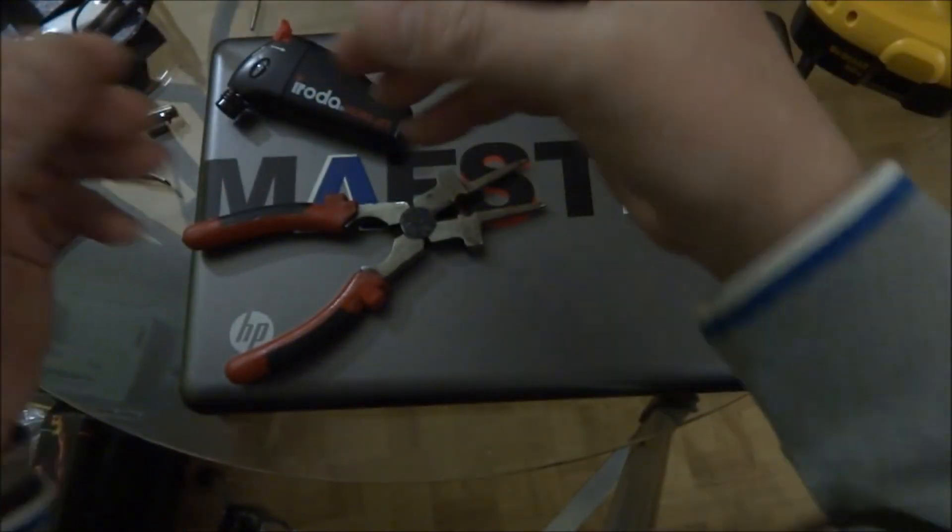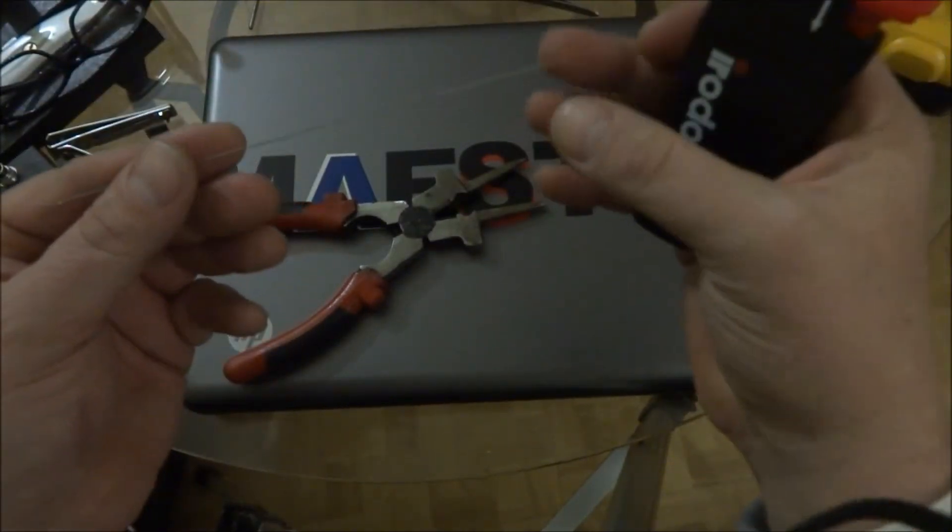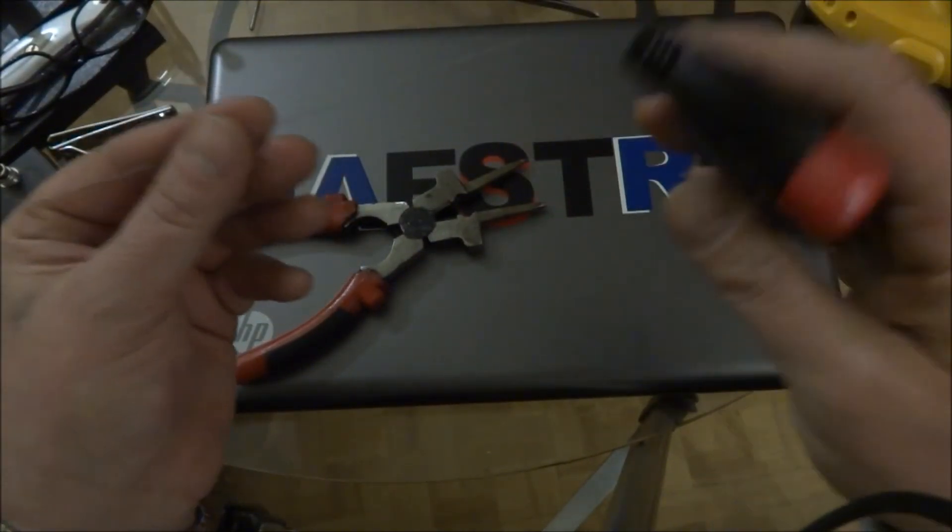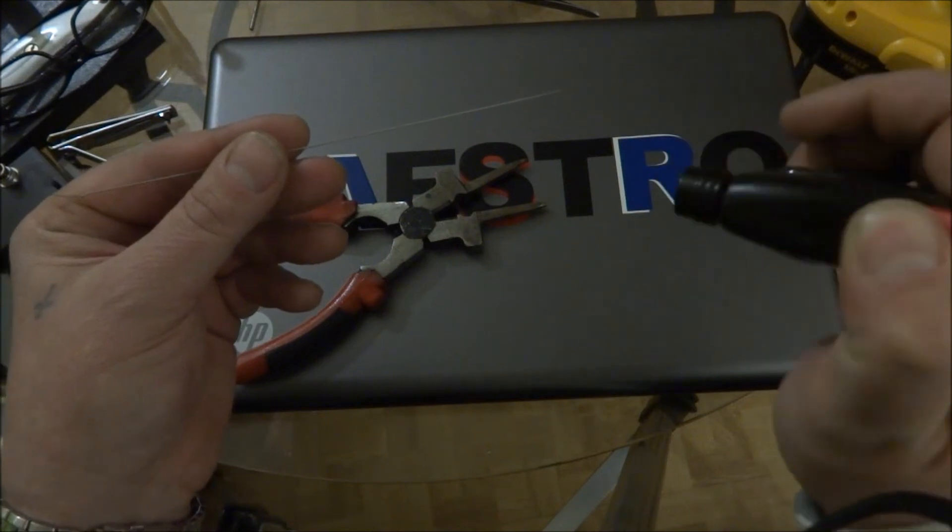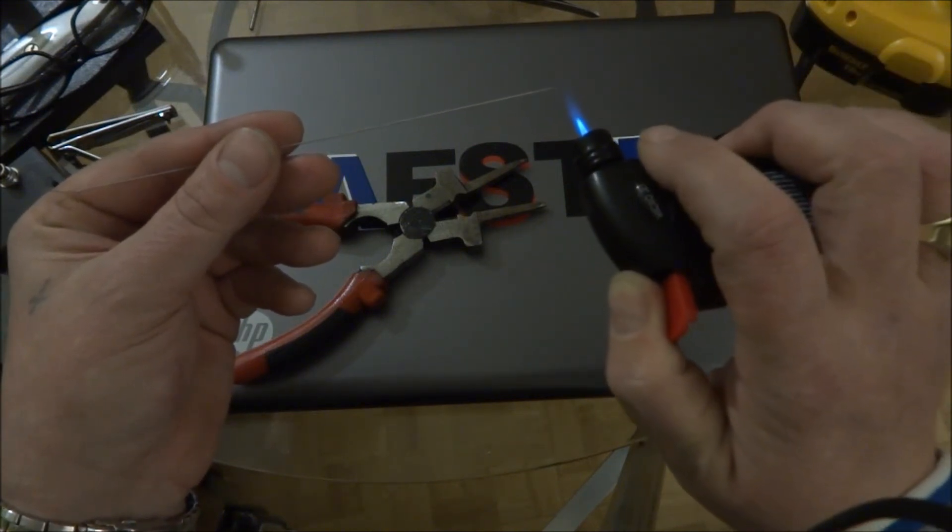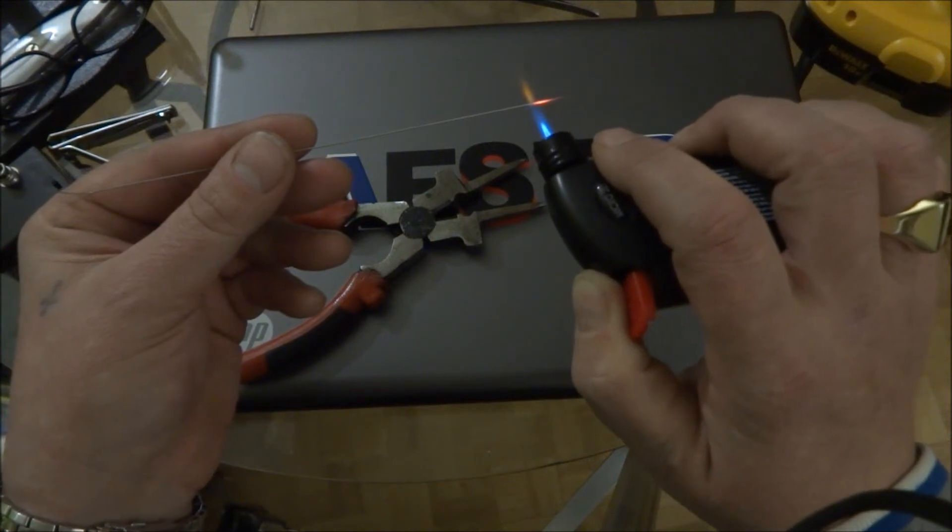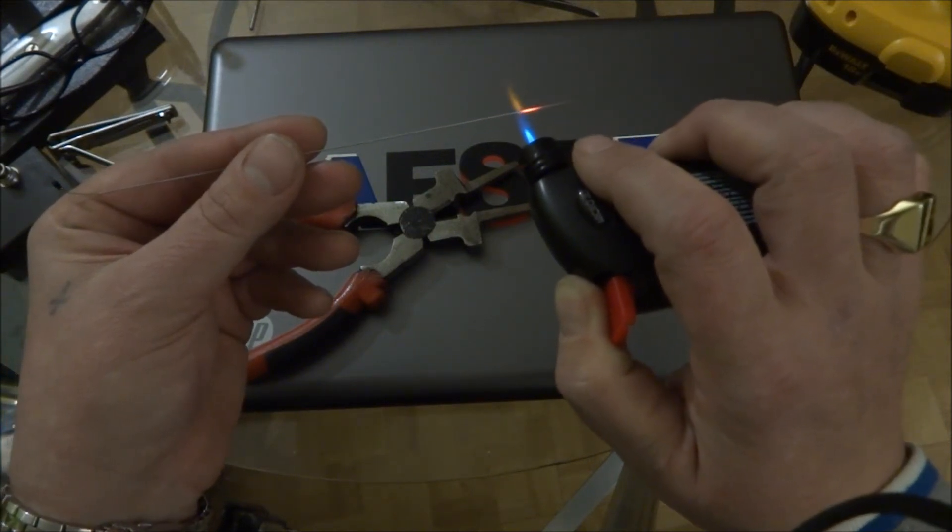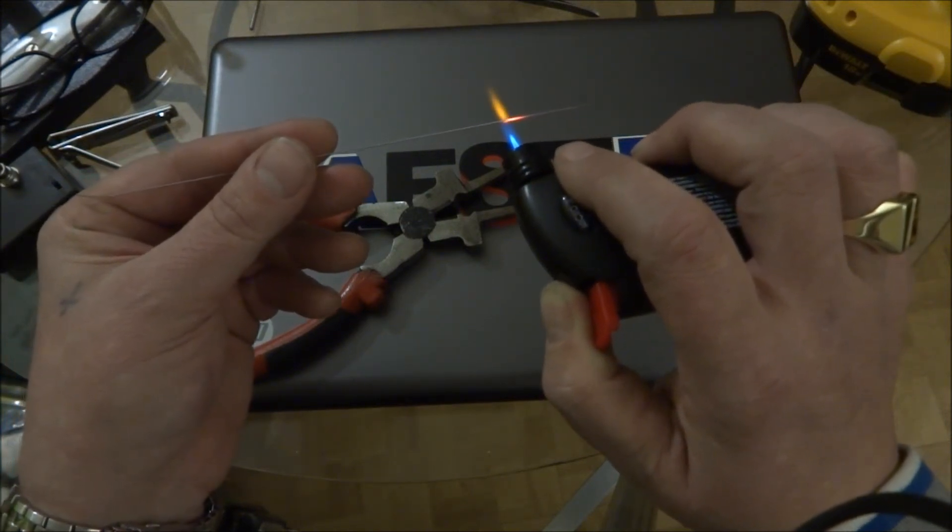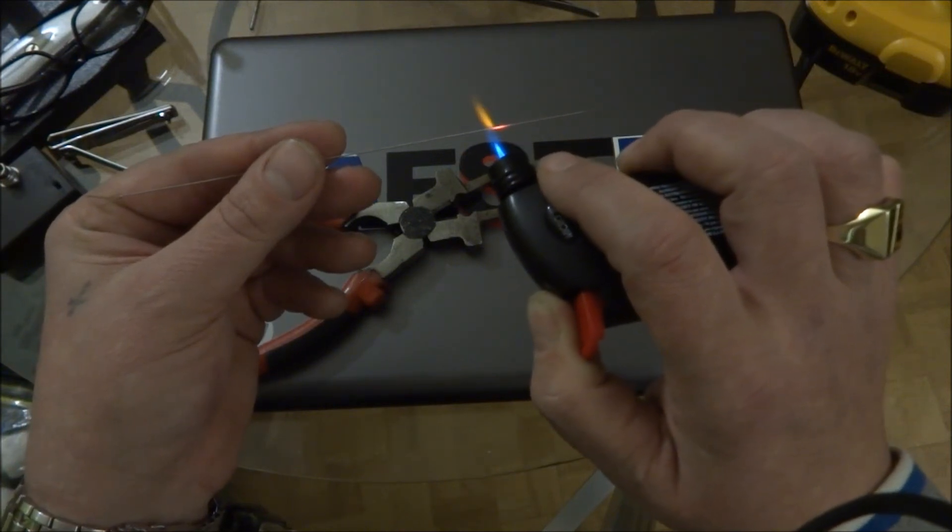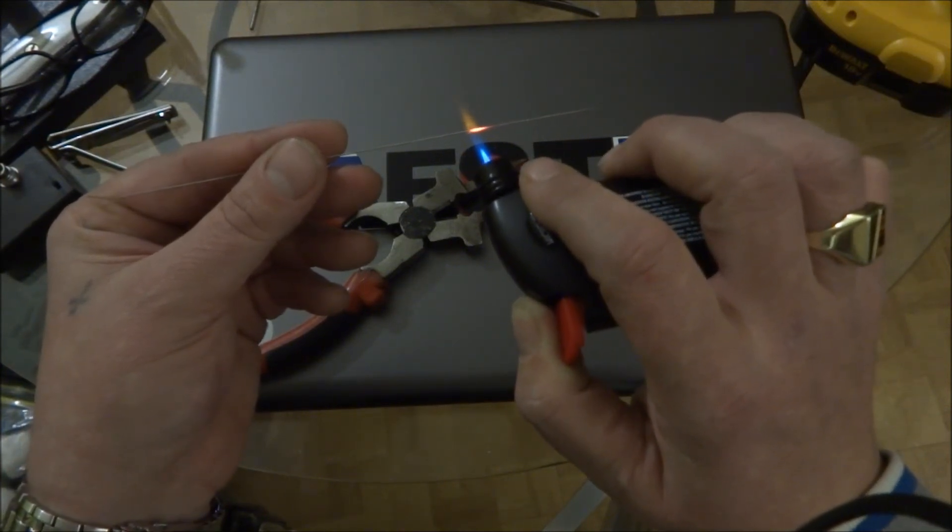Now all you need to do is oxidize it, and you're ready to wrap. By oxidizing it, I'm just getting the springiness out and keeping it in place. Really, you don't even need to oxidize this because it's so thick right now, you're probably not going to have a problem wrapping this on anything.